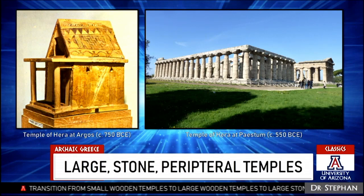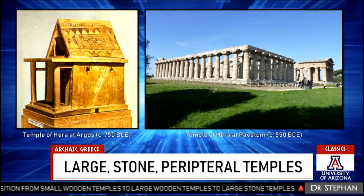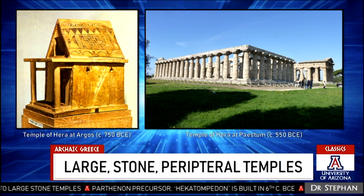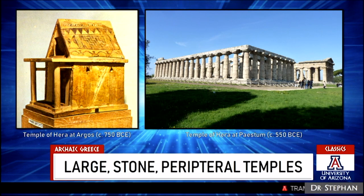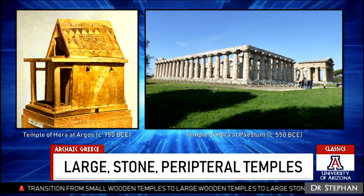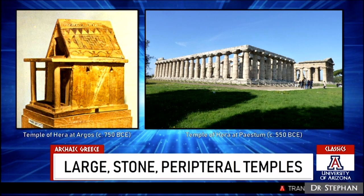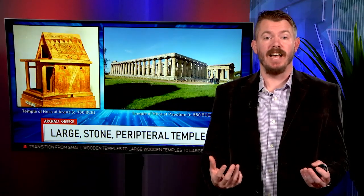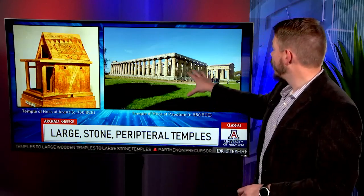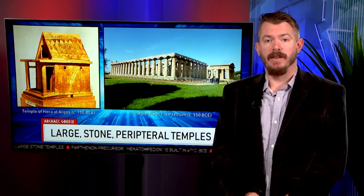We also get the development of temples as we think of them during the Archaic period. We saw the very start of this in the 8th century with a little model of a temple from the 700s — the Temple of Hera at Argos. But later in the Archaic period, by the middle of the 6th century BC, they are building massive stone temples with iconic columns going all the way around. These are Greek temples the way we think of Greek temples. While this is perfected in the classical period with the Parthenon, the first ones appear during the Archaic.